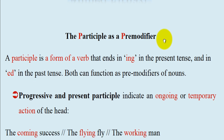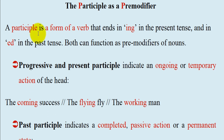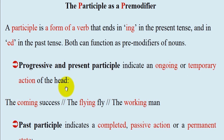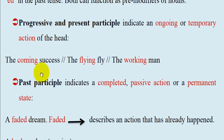Now, the participle as a pre-modifier. A participle is a form of a verb that ends in -ing in the present tense and in -ed in the past tense. Both -ing and -ed forms function as pre-modifiers of nouns. The present or progressive participle indicates an ongoing or temporary action of the head. Examples: the coming success — ongoing action; the flying fly — -ing form; the working man — also -ing, progressive.